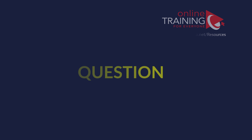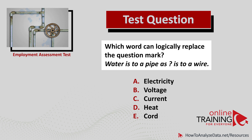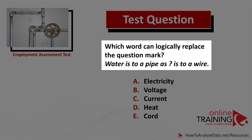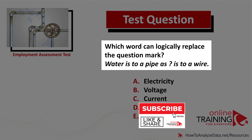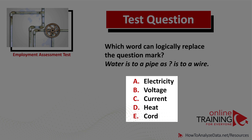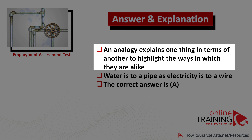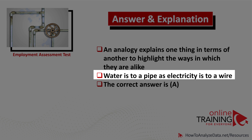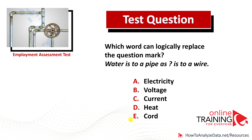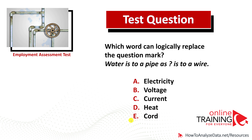Let's look at a tricky question often used to test your knowledge of synonyms and analogies. Which word can logically replace the question mark? Water is to a pipe as something is to a wire. You have five choices: electricity, voltage, current, heat, or cord. In logical terms, this asks you to explain things in terms of another and highlight ways they are alike. Water flows through a pipe as electricity flows through a wire. The correct answer is choice A, electricity.